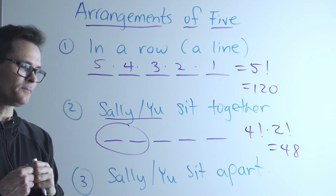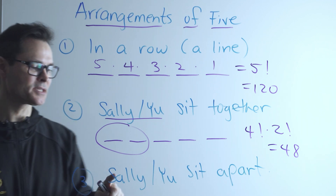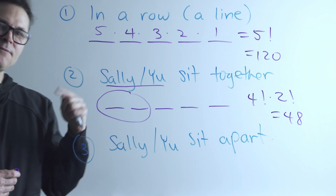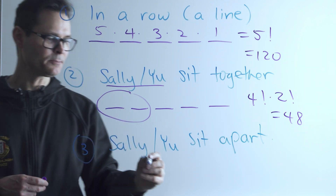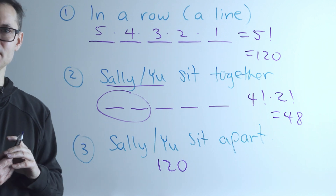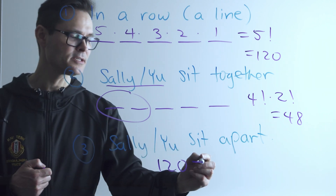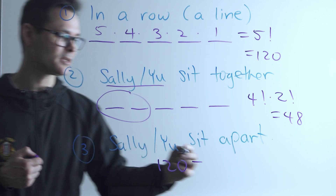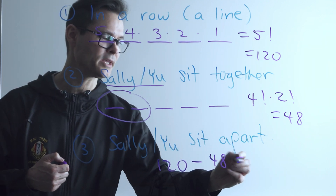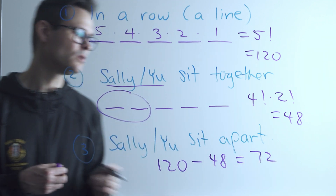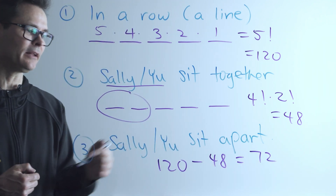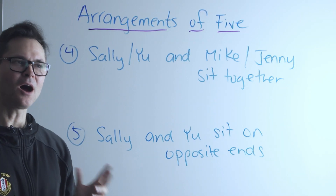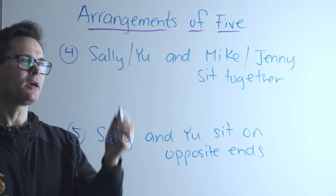The next question — how many ways do they sit apart? That could get really difficult directly, but using the complement is easy. Take the total number of ways five people can be seated in a line (120) and subtract those where they are together (48). The difference is the arrangements where they're not together: 120 minus 48 equals 72.